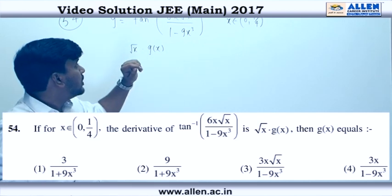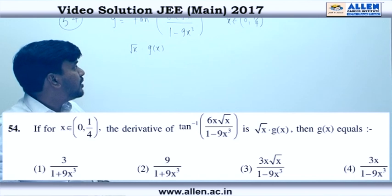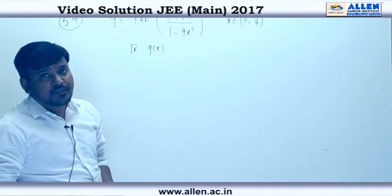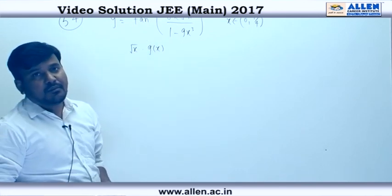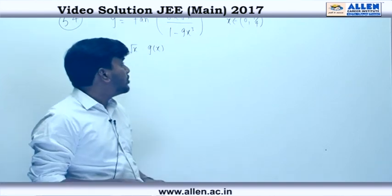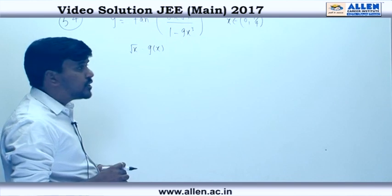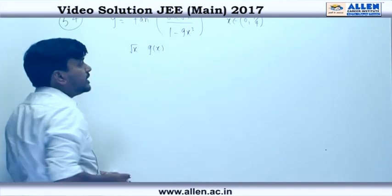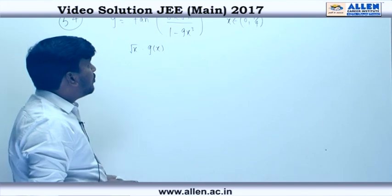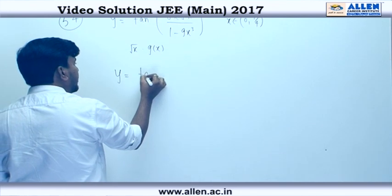In question number 54, a function is given in this form root x into gx. We have 4 options. We can write this as y equal to tan inverse.